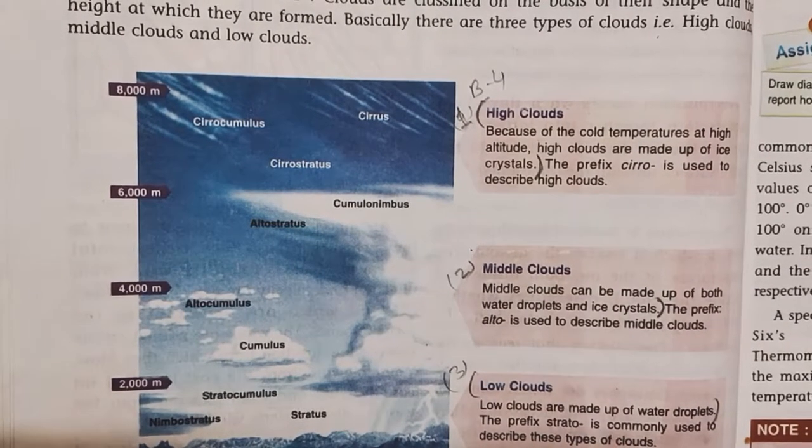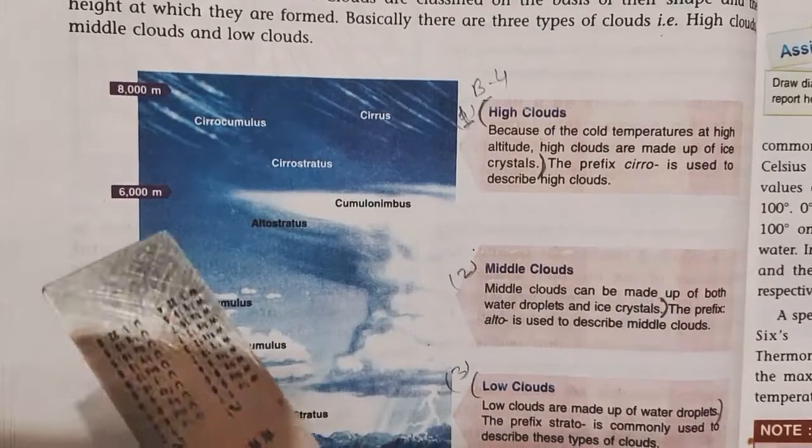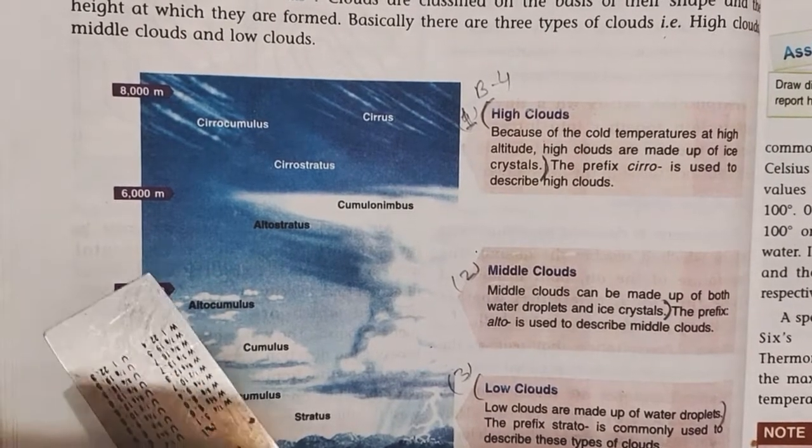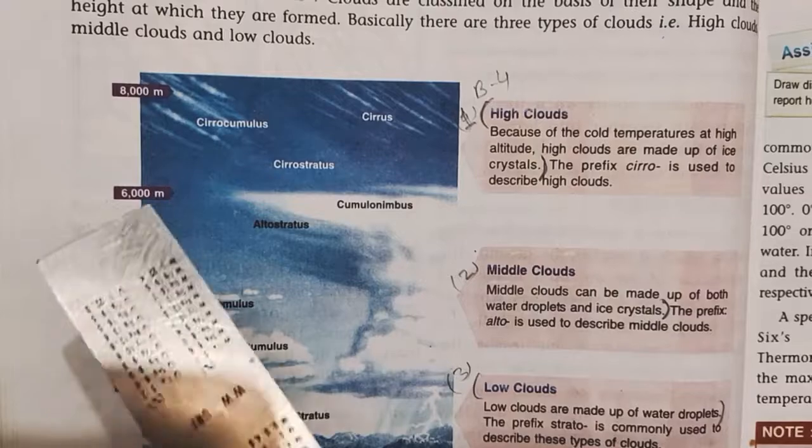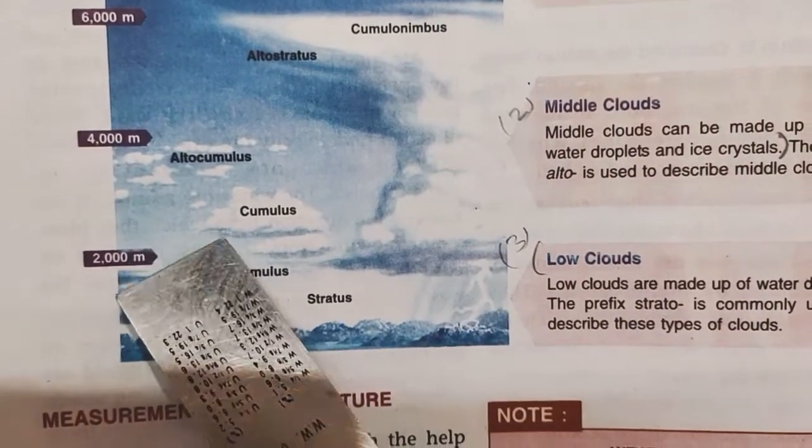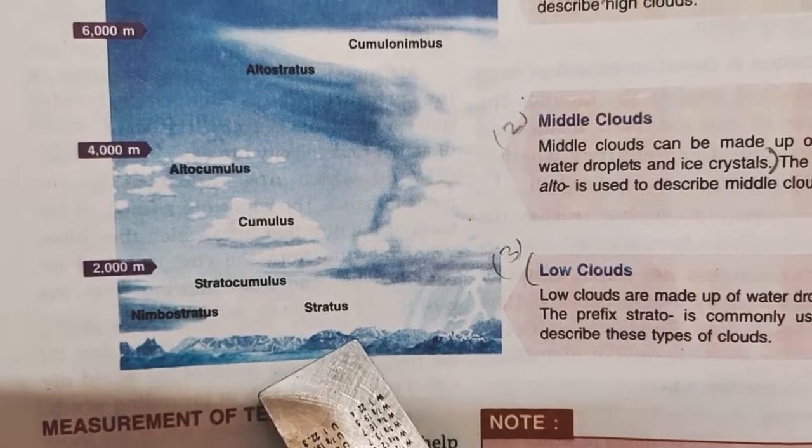High clouds are formed between 6000 to 8000 meters. Middle clouds are formed between 4000 meters to 6000 meters. Low clouds are formed below 2000 meters.